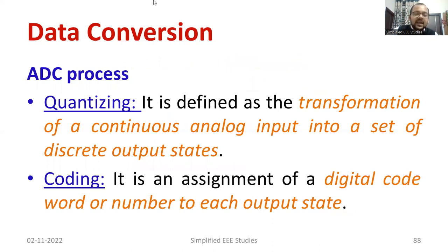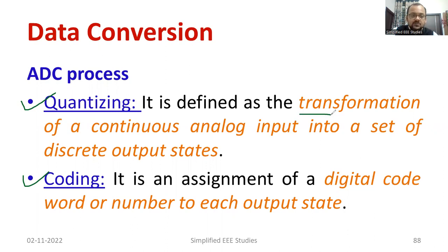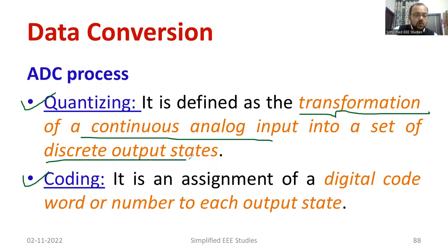Basically, ADC involves two segments or two processes. The first one is called the quantization process and the second one is known as coding. These are the two processes involved in every type of ADC. According to the principle of quantizing, the transformation of a continuous analog input into a set of discrete outputs or discrete stages — corresponding to each analog value, you will be transforming the analog into digital form. That process is generally called quantizing.